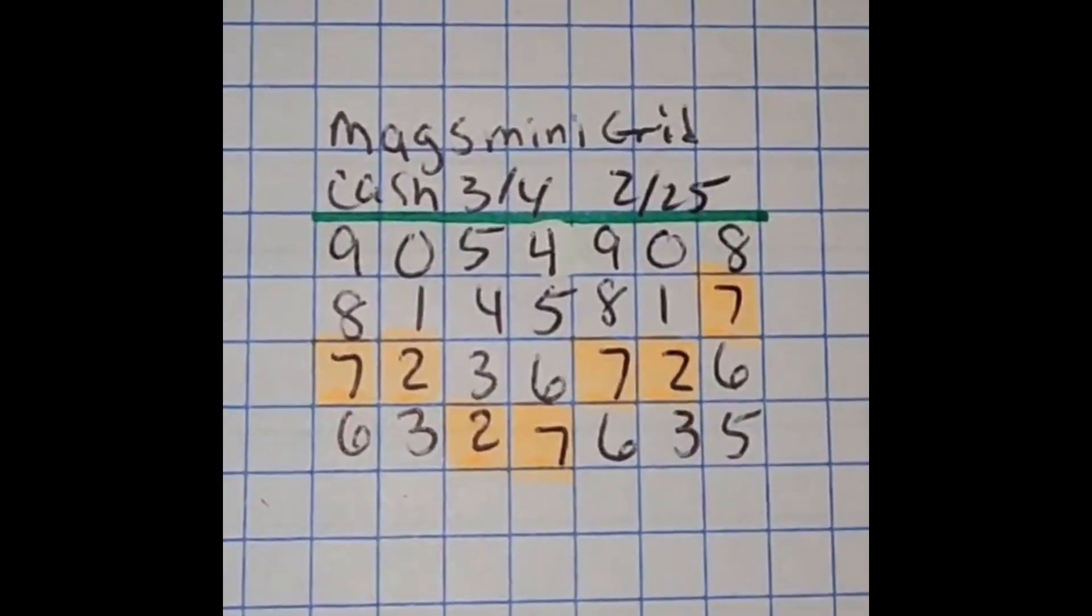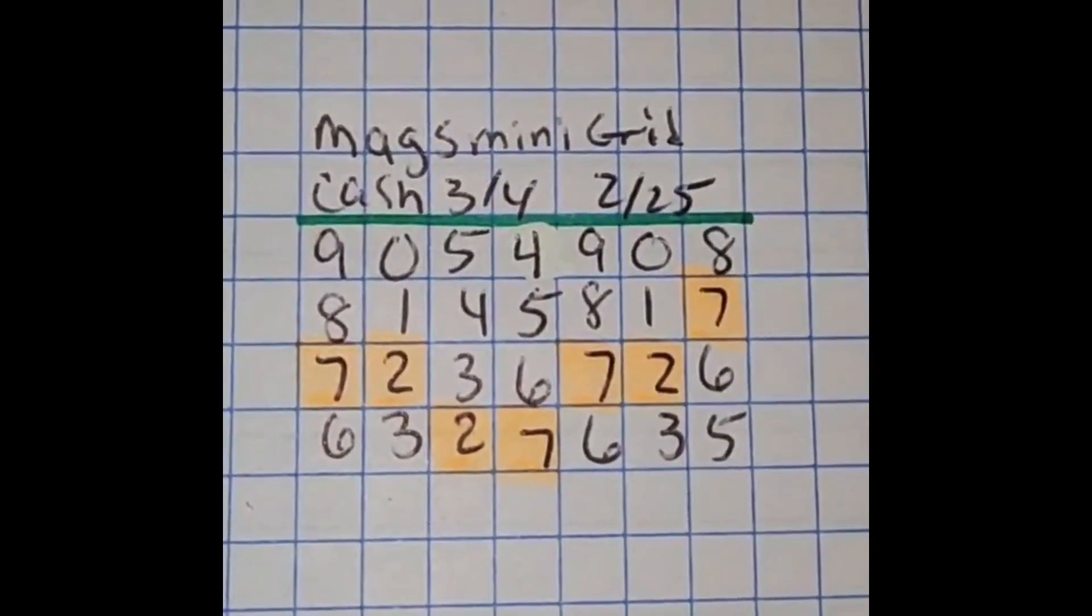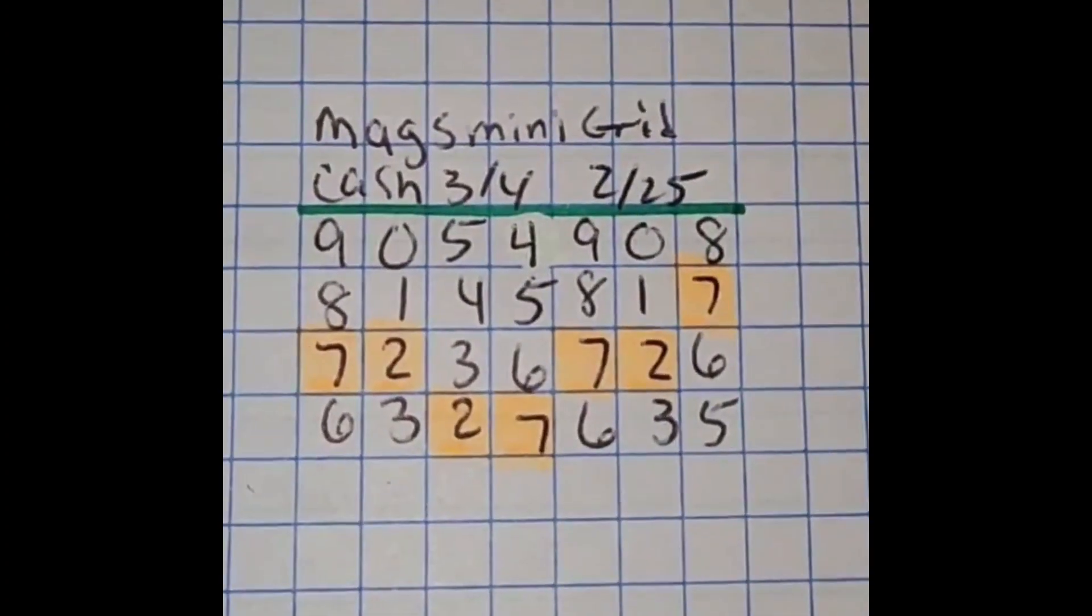Hey y'all, it's Magnolia Money and this is the Mags Mini-Grid for the day of February 25th. This is for your Cash 3, Pick 3, Cash 4, and Pick 4 games.